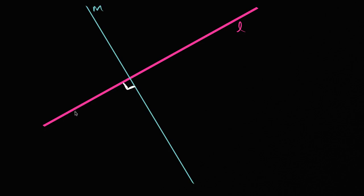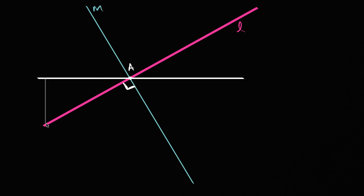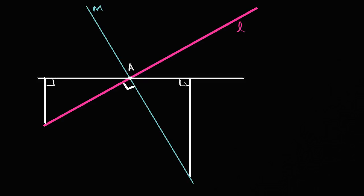I'm going to construct some other lines here to help us make our geometric argument. I'll draw a horizontal line that intersects at this point right over here — let's call that point A. And now I'm going to drop some verticals from that — a vertical line right over here, and a vertical line right over here. That is 90 degrees, and that is 90 degrees. This top line is perfectly horizontal, and I've dropped two vertical lines, so they're at 90-degree angles.